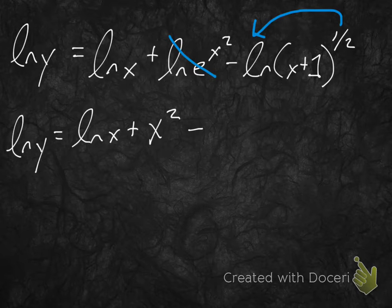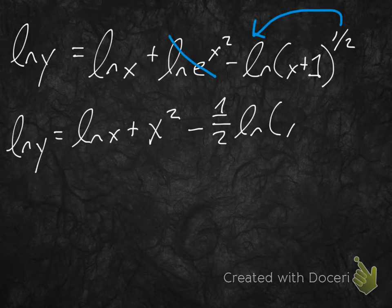minus ln of x plus 1 to the 1 half. Well, can't we just, using our logarithm rules, pull this 1 half down in front? Yeah, we can just pull this power. So, we have 1 half, sorry, 1 half ln, x plus 1.